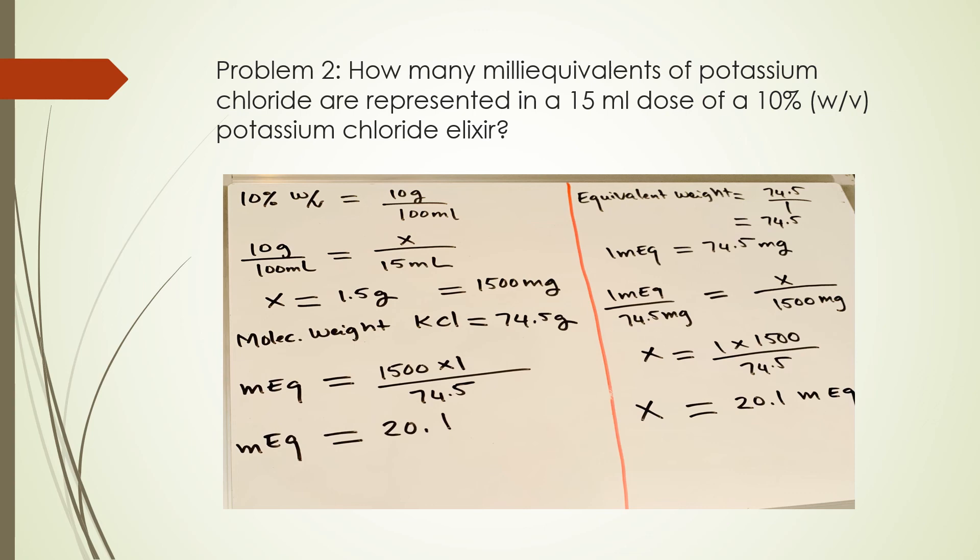Now using ratio and proportion, we know 1 mEq is 74.5 milligrams. So then for 1500 milligrams, that's x. X equals 1 times 1500 divided by 74.5. And your final answer is again 20.1 mEq. Does that make sense? So again, you can use either method to solve this problem.